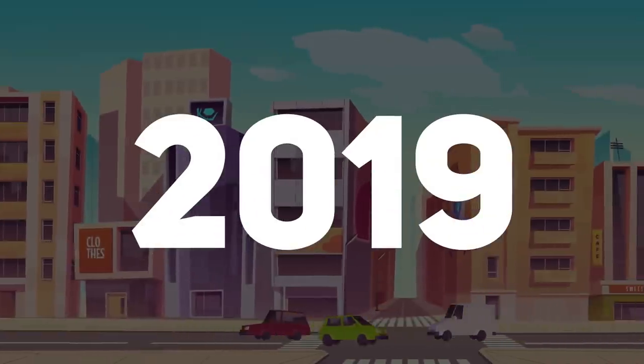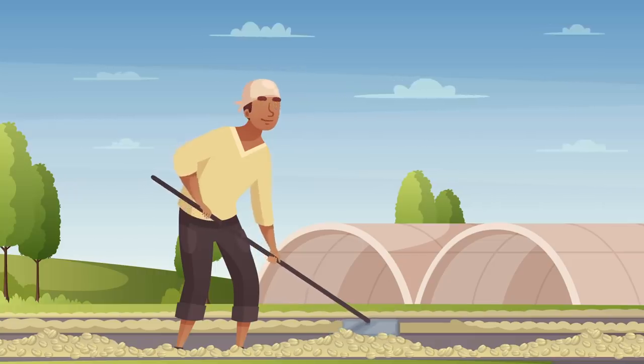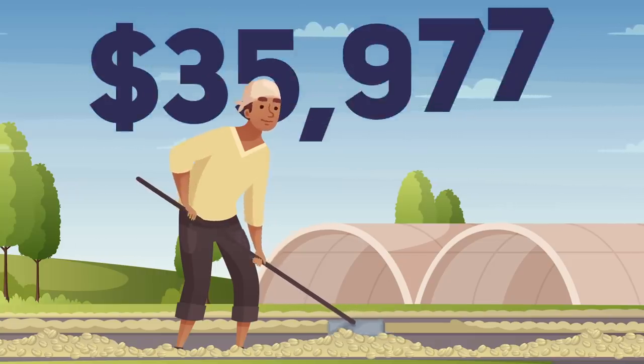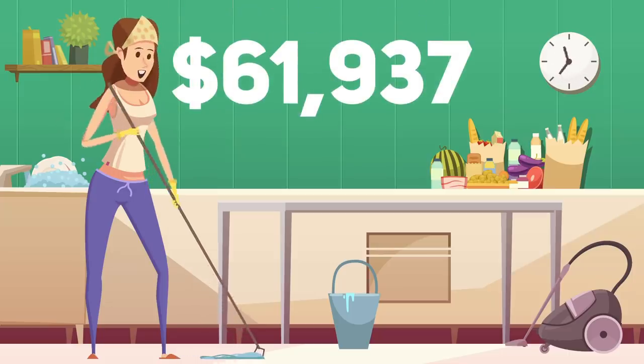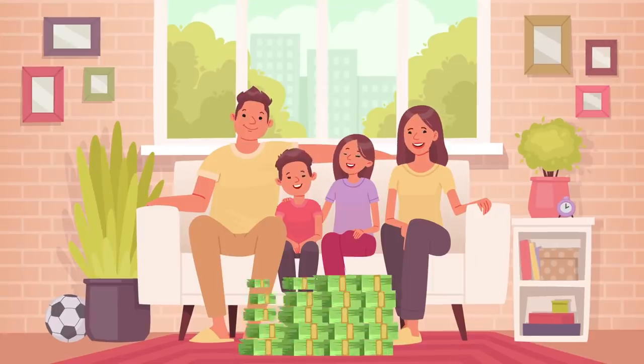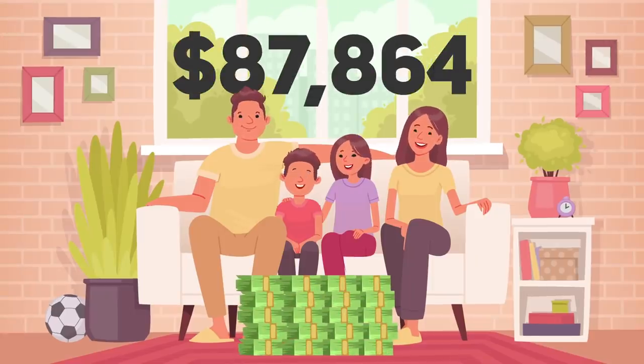In 2019, right before the pandemic, the bureau of labor statistics said that the median personal income is $36,000 or $61,000 for households. But let's ignore the median and focus on the average household income, which is $88,000.